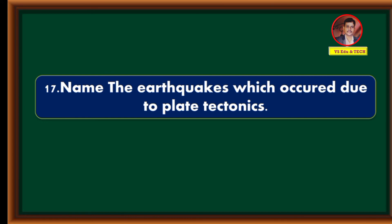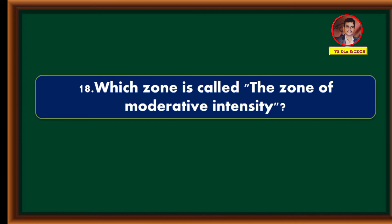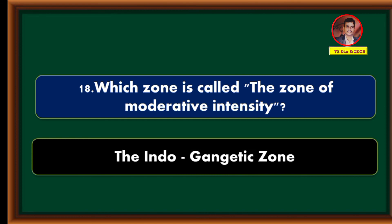Name the earthquakes which occur due to plate tectonics. Chamoli and Uttarakashi. Which zone is called the zone of moderate intensity? The Indo-Gangetic zone is called the Zone of Moderate Intensity.